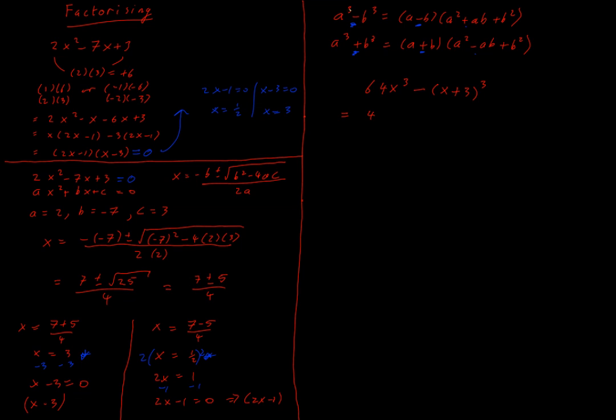So first job is to write it in this form: something cubed minus something cubed. And now I can apply my pattern. This is a³ minus b³. So applying my formula, I have first term a minus second term b. So 4x minus (x+3). It doesn't matter that this is a bracket - it's something cubed, so I can still apply the pattern to it without any issues.